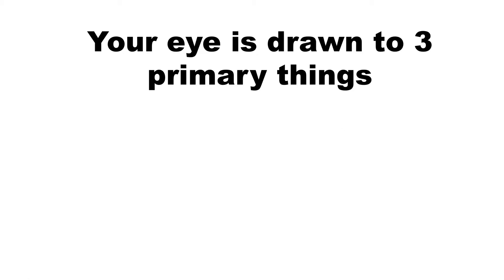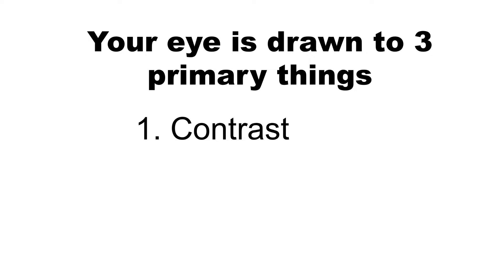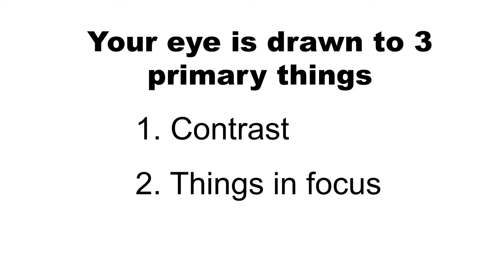When you look at an image, your eye is drawn to three primary things — this is very basic, just keep it in the back of your mind. Typically when you look at a photograph, first, your eye is drawn to contrast — that is the difference between, let's say, black and white, or lighter shades and darker shades. The contrast helps bring your subject out so your eye is drawn to it more quickly.